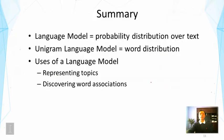In this lecture, we talked about the language model, which is basically a probability distribution over text. We talked about the simplest language model — the unigram language model — which is just a word distribution. We discussed two uses of a language model: one is to represent the topic in a document, a collection, or in general; the other is to discover word associations. In the next lecture, we'll talk about how a language model can be used to design a retrieval function.